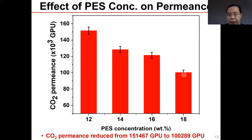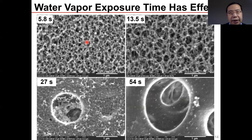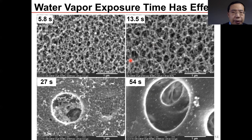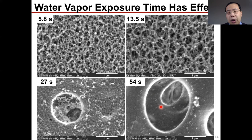Here we show the effects of water vapor exposure time. A 5.8-second exposure time was already long enough to obtain the bicontinuous structure. Even at 13.5 seconds it is still very good, meaning our processing window is quite wide. However, when we tried as long as 27 seconds, because the film was exposed too long, the surface pores grew bigger and bigger — almost like big holes formed, which would be defects we do not want.